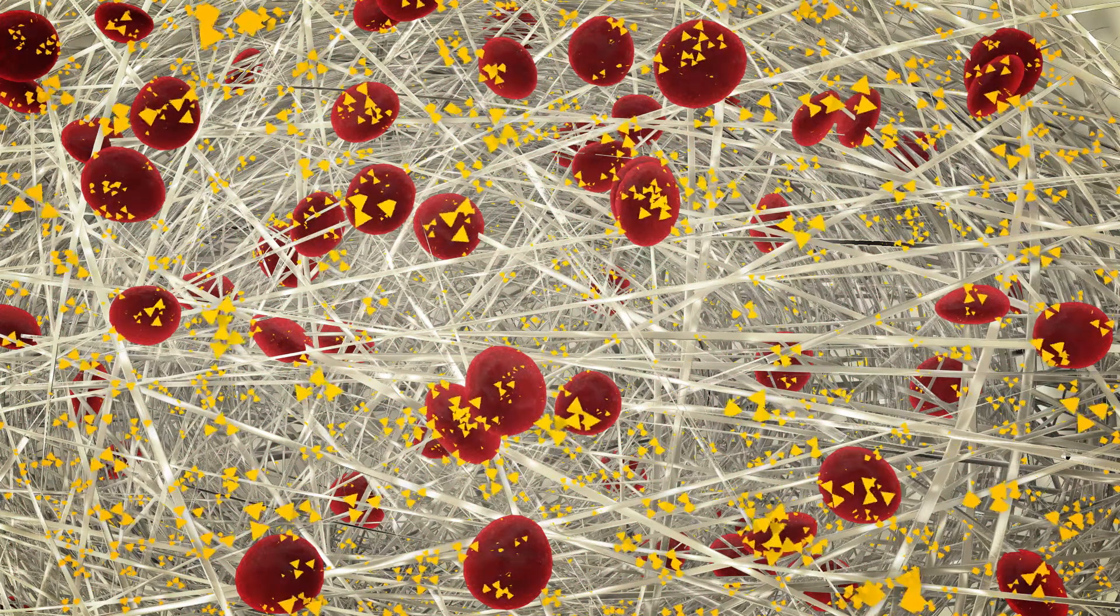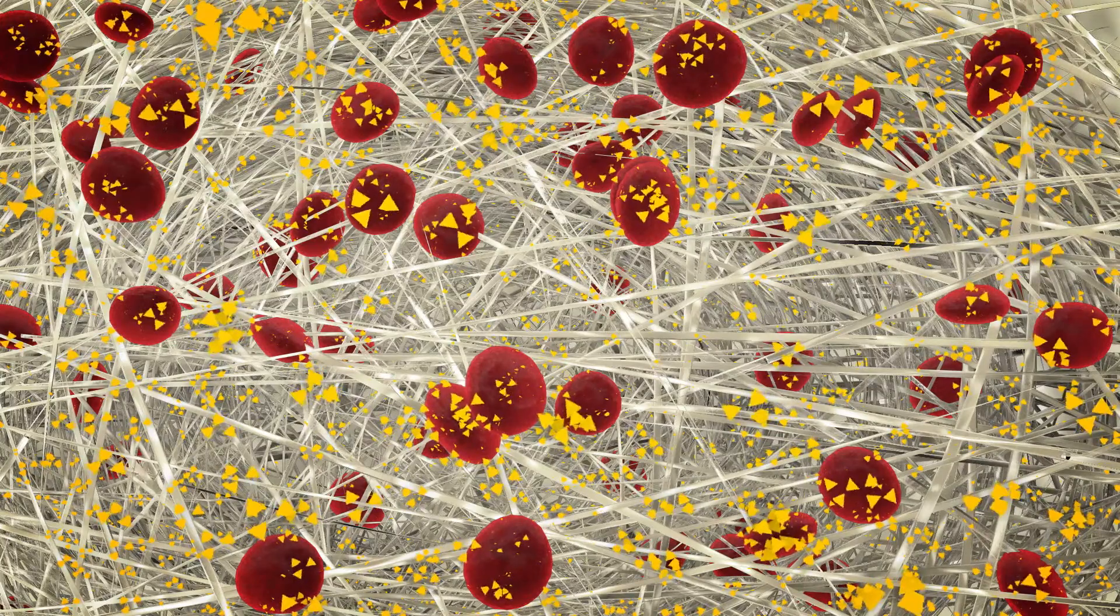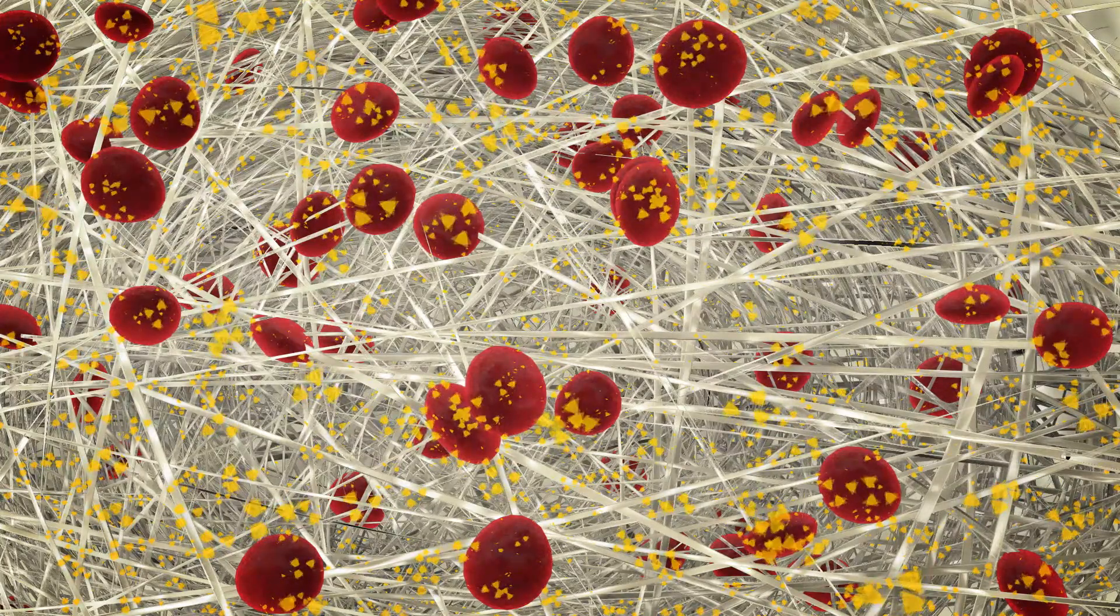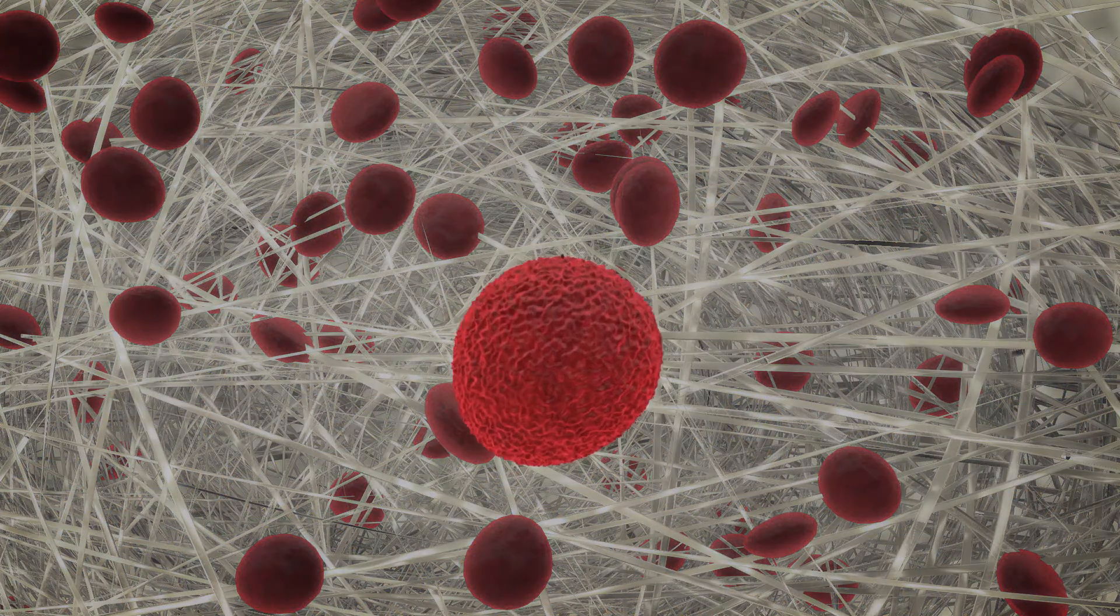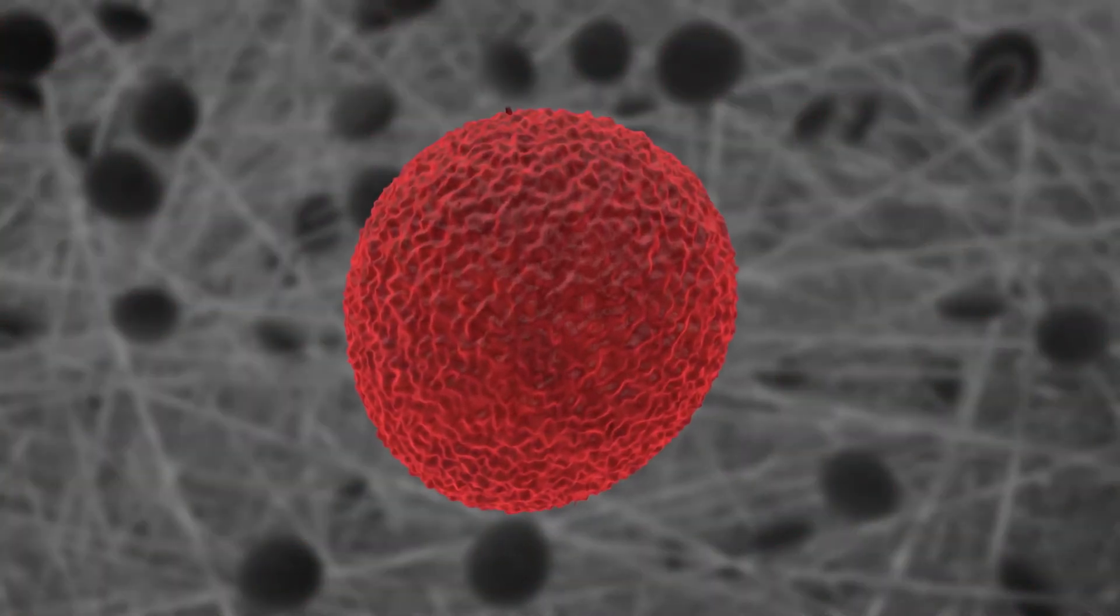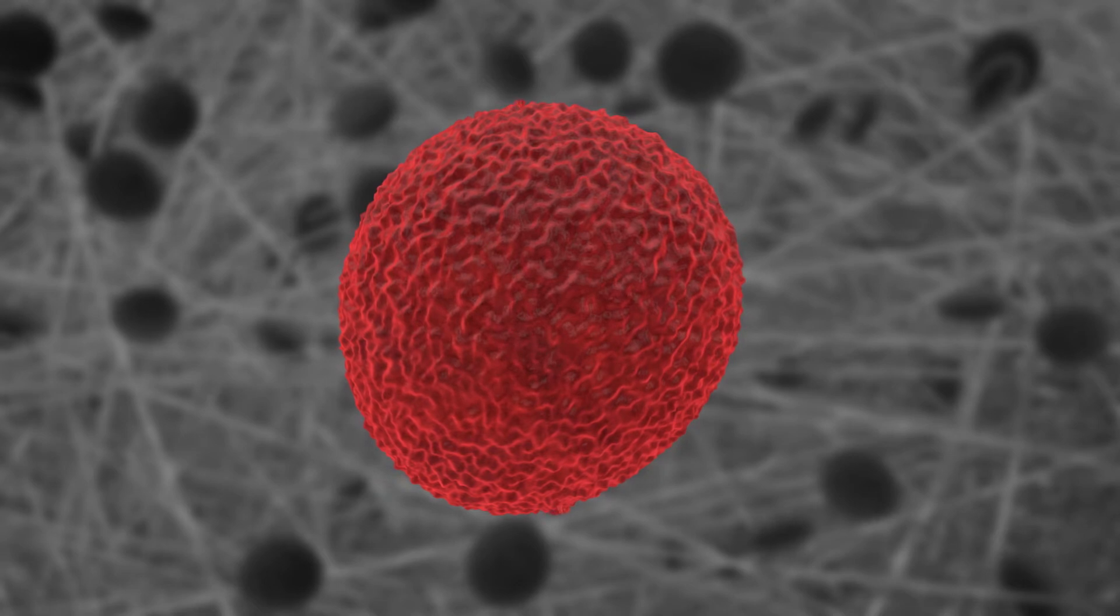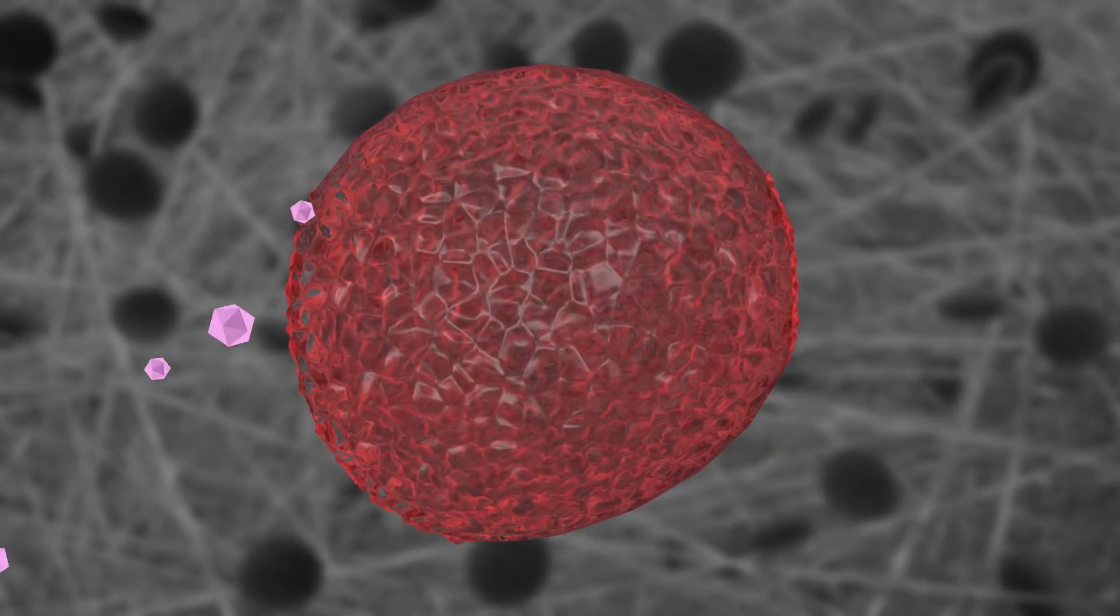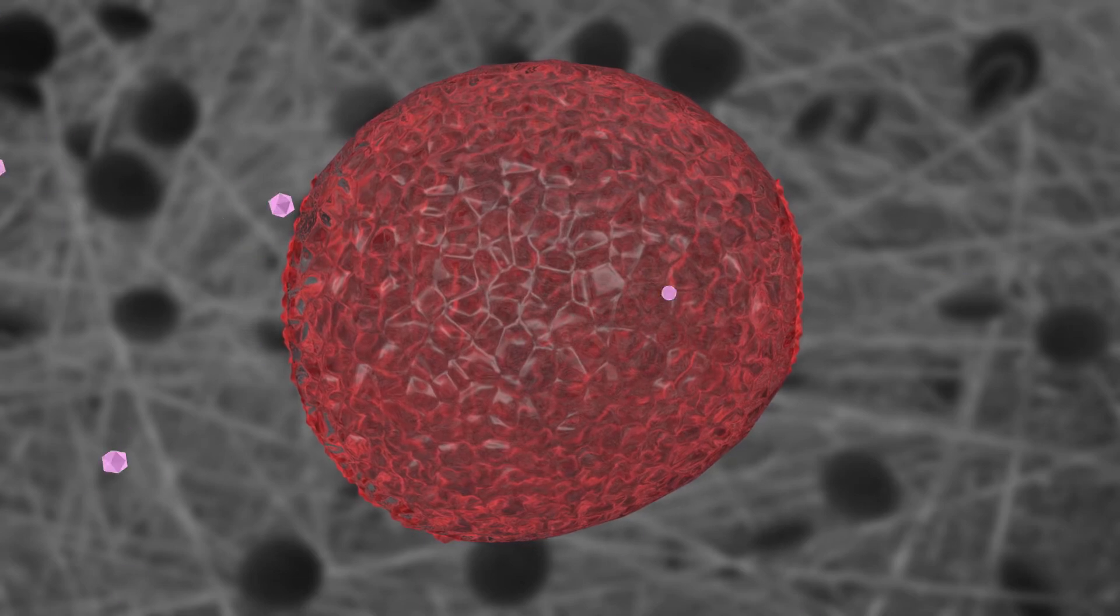These helper cells also reduce inflammation and help defend the islets from an attack by the immune system, which sees the new cells as foreign. To add further protection from immune attack, DRI scientists have developed unique technologies to coat the cells with a protective ultra-thin barrier, like shrink wrapping, to prevent the immune system from destroying the islets.